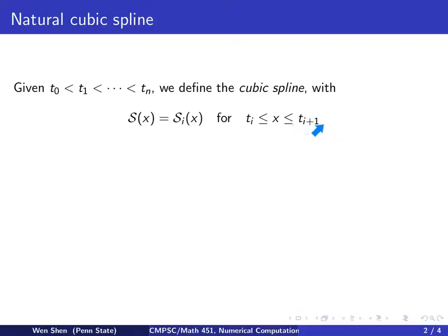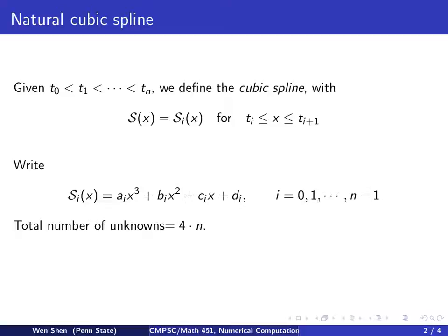Since each Si shall be a cubic polynomial, I could write it in this form: Ai x cubed plus Bi x squared plus Ci x plus Di. So for each i, I would need four parameters. Once those four parameters are given, my spline function is determined.